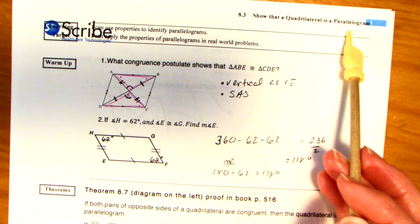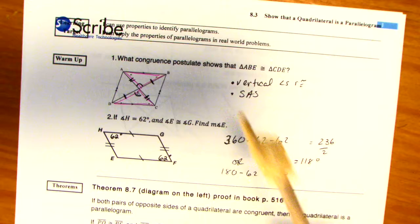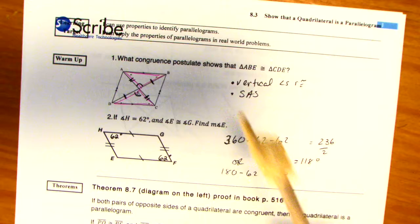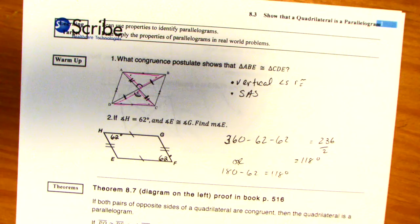8.3 show that quadrilateral is a parallelogram, so now we're going to be looking at the properties so we can determine whether or not it's a parallelogram. So I can use properties to identify parallelograms and then use them in real world problems. I do apologize that this is all written out, but I'll try to point things out again.